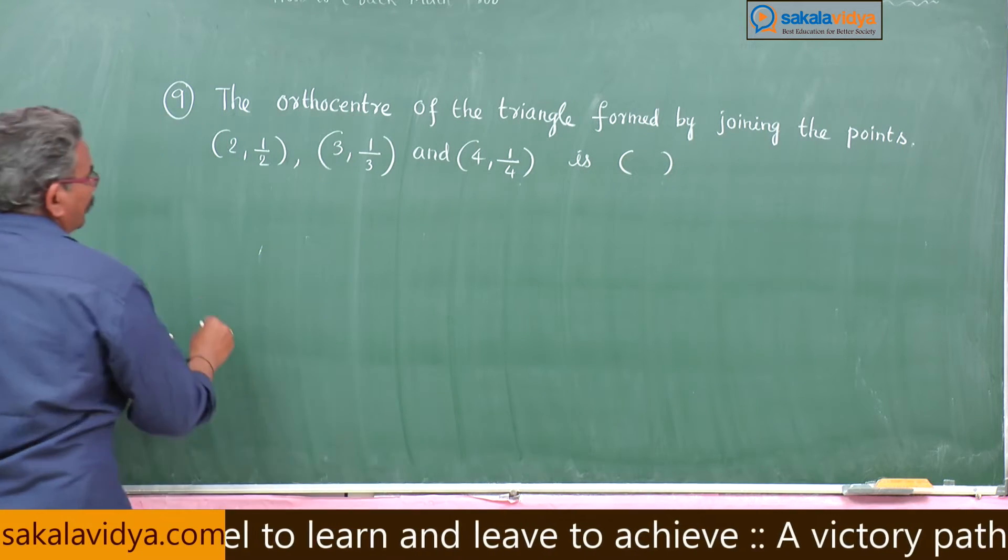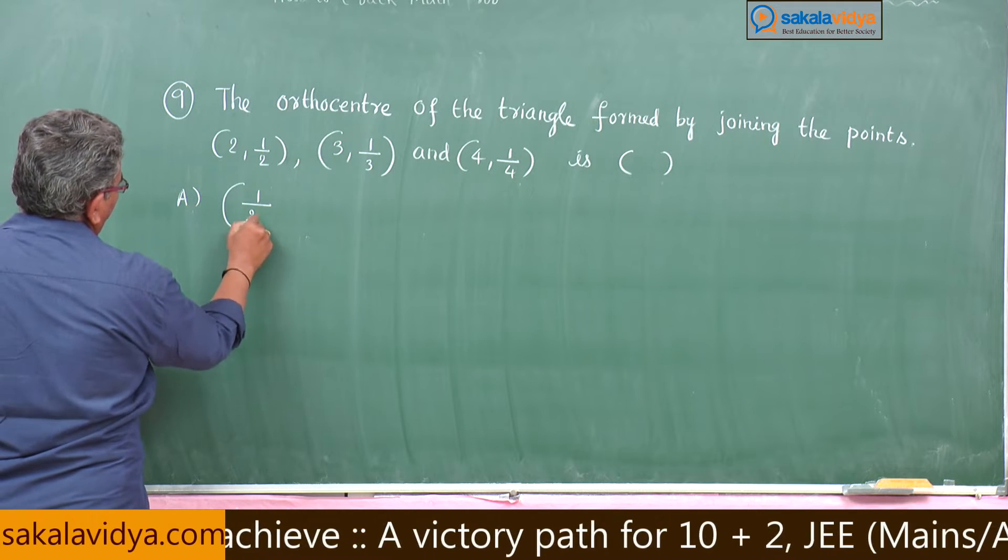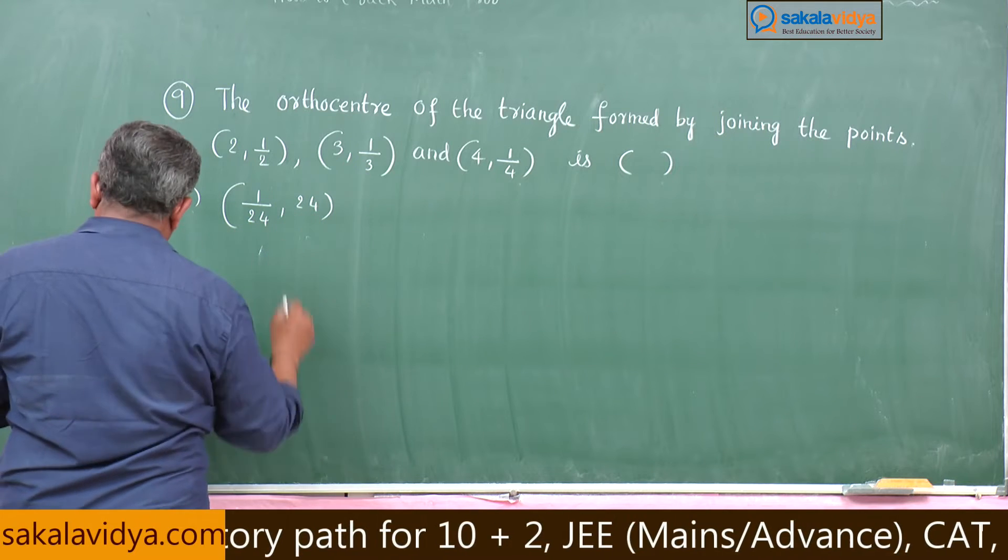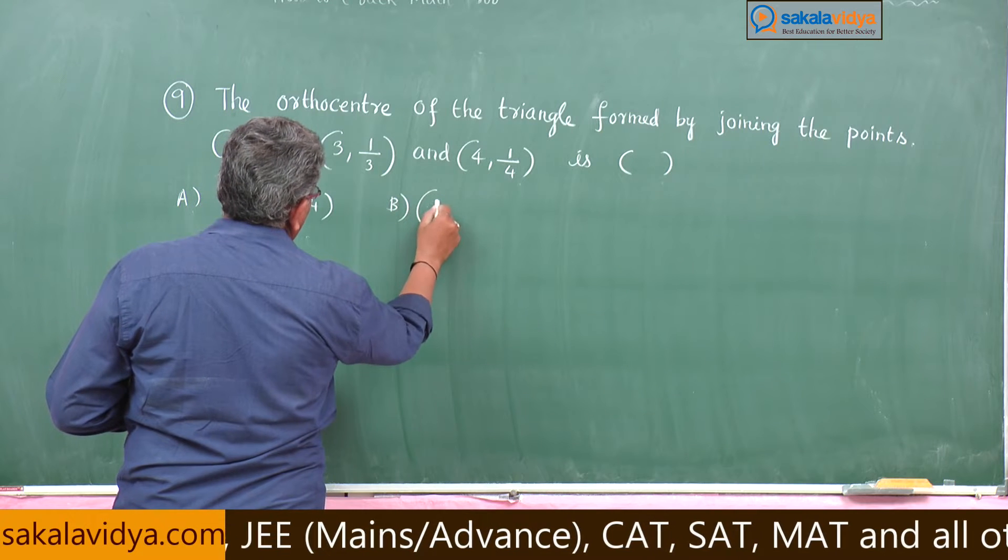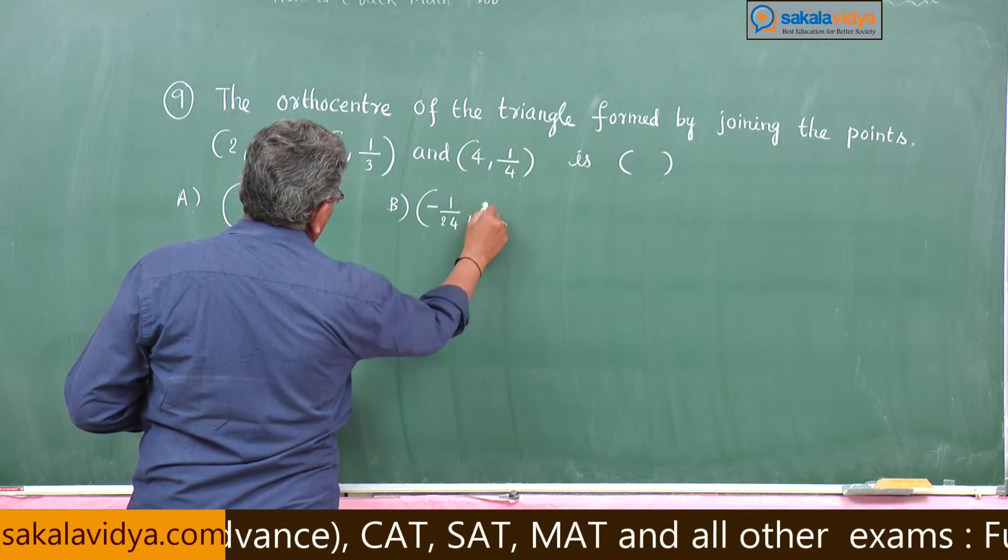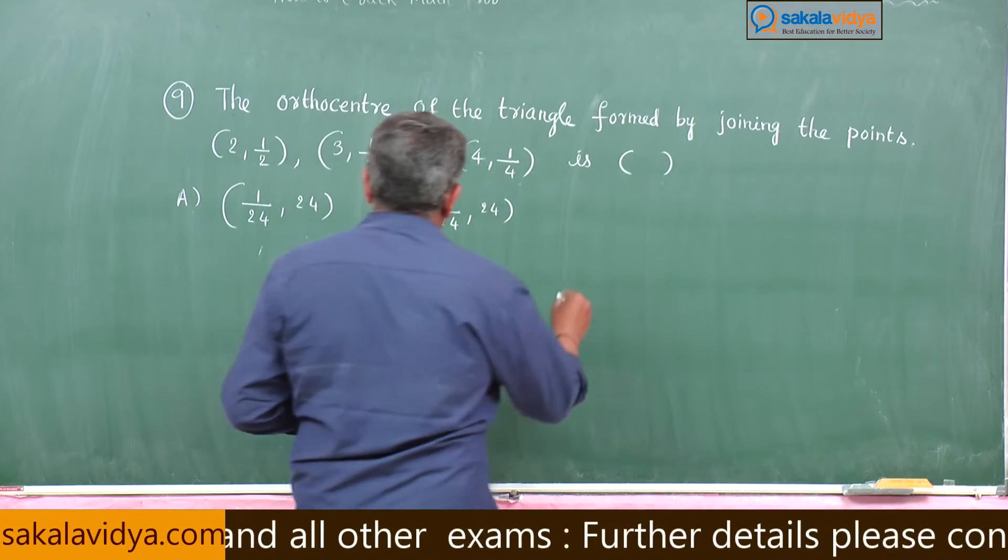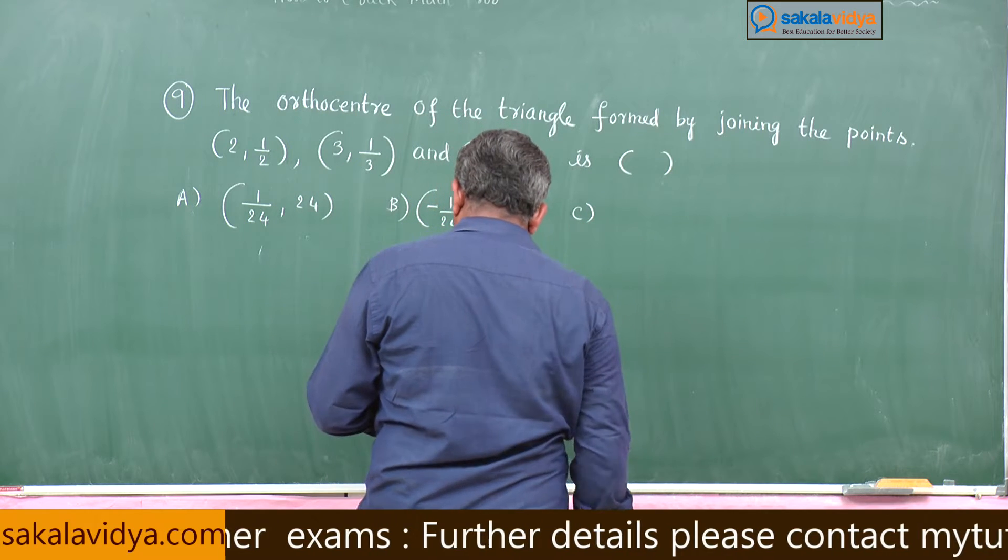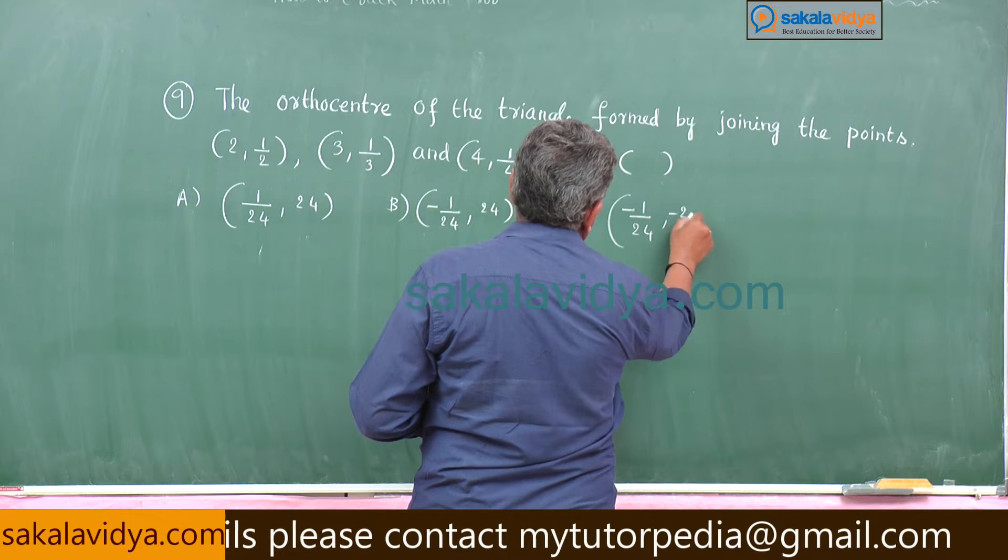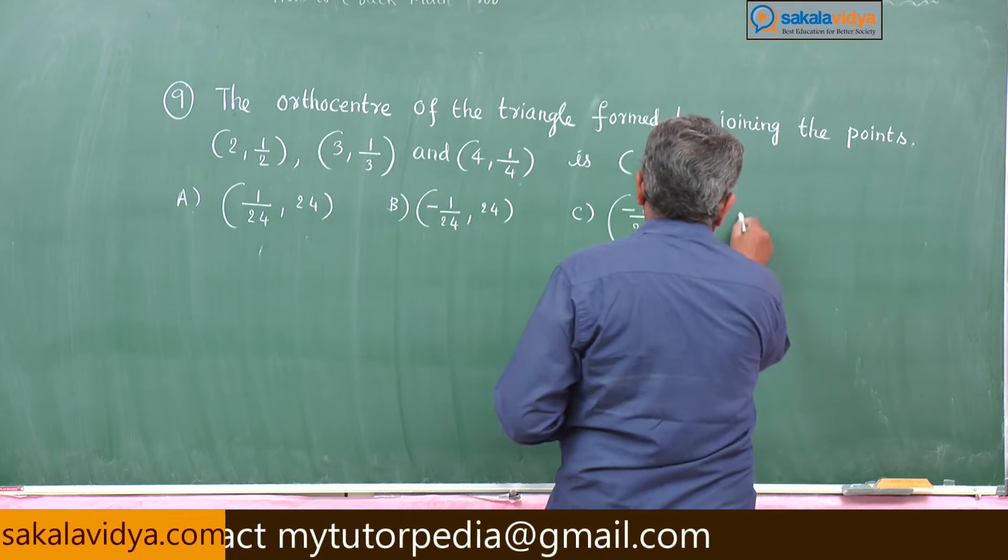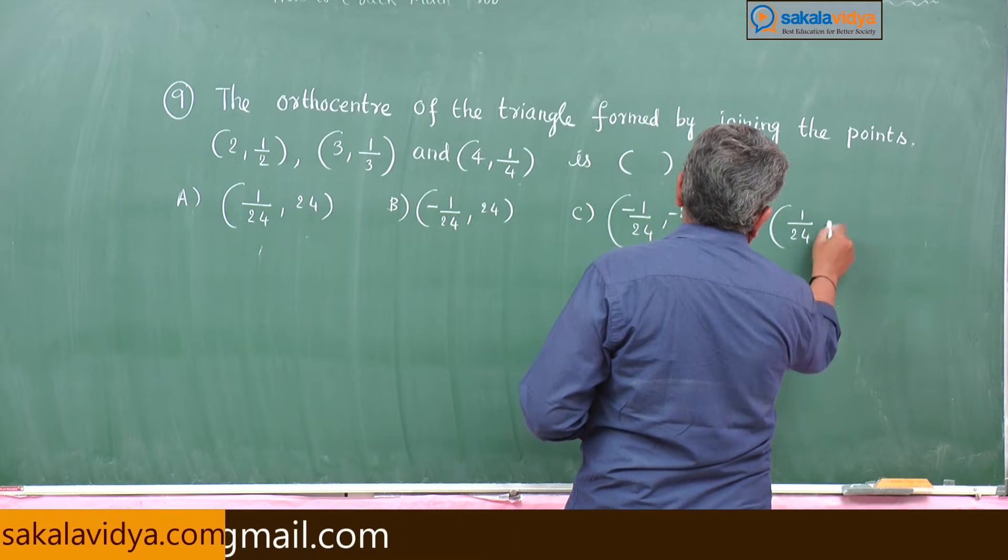The options are: a) 1 by 24 comma 24, b) minus 1 by 24 comma 24, c) minus 1 by 24 comma minus 24, d) 1 by 24 comma minus 24.